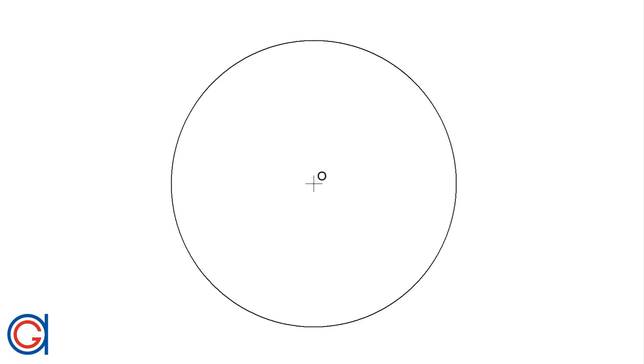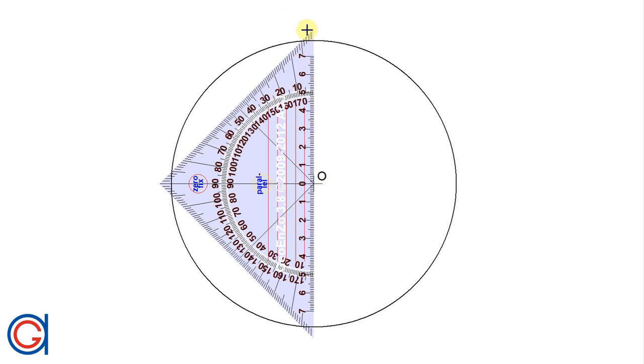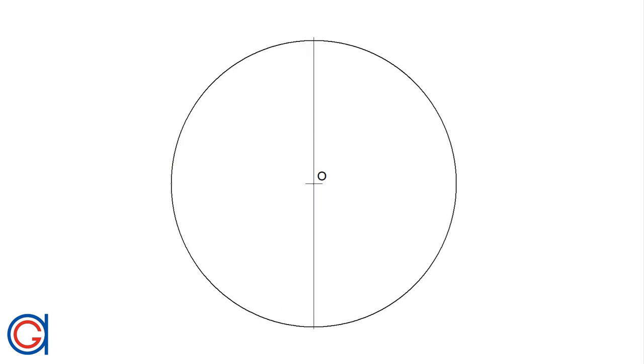Hello, today we are going to learn how to divide any circle into 9 equal parts. To do this firstly we will draw a vertical diameter which cuts the circle at two points A and P.